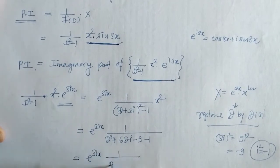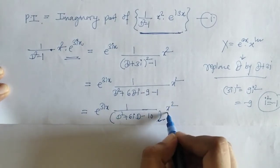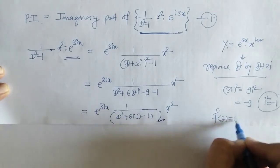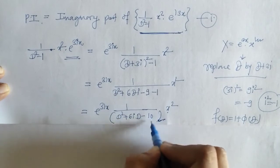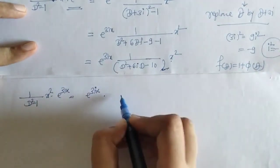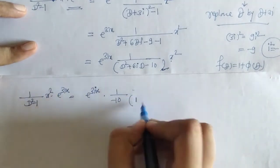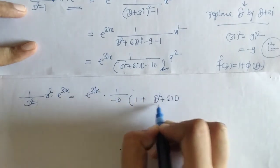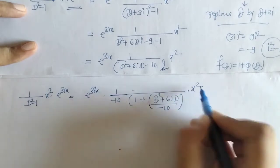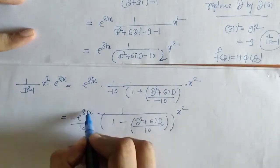Now we have to operate this f(d) on x². We express f(d) in the form 1 + φ(d). For this we take the lowest degree term outside; the lowest degree term is −10. So we factor out −10, leaving 1 plus (d² + 6id)/(−10) inside, and then we apply the expression to x².